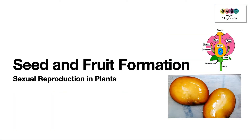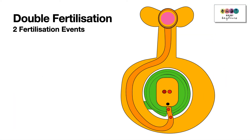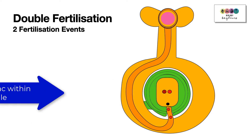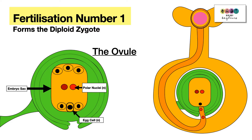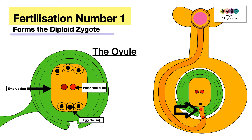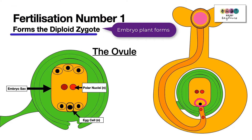Seed and fruit formation is part of sexual reproduction in plants. The seed and fruit develop because of double fertilization — two fertilization events that take place in the ovule of the flower, specifically the embryo sac within the ovule. Fertilization number one forms the diploid zygote, when one of the male gamete nuclei fuses with the female egg cell, forming the diploid zygote from which the embryo plant will develop.